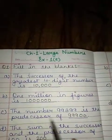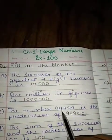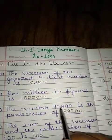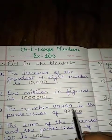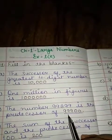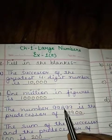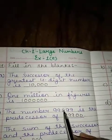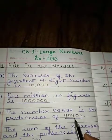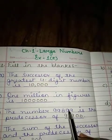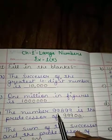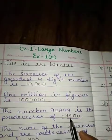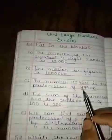Question number c: the number 99,899 is the predecessor of? Toh 99,899 kis ka predecessor hoga? So we have to write the successor of this number. Yeh poocha gaya hai ki yeh kis ka predecessor hai? Matlab, yeh number kis ke pahle aata hai? So the answer will be 99,900.